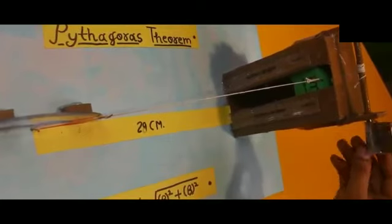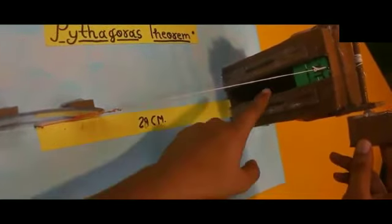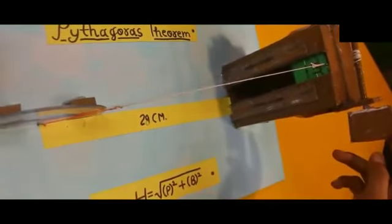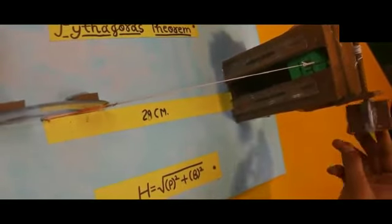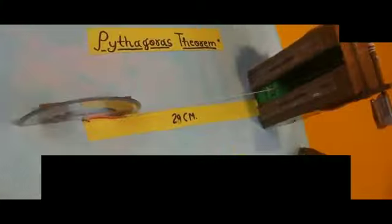By doing this, two things are happening. One, the angles are changing and other, the height is also getting changed. If we leave it, it will automatically come down.